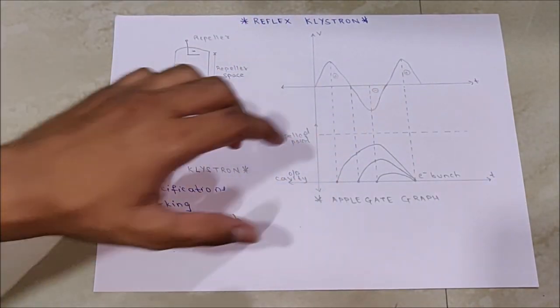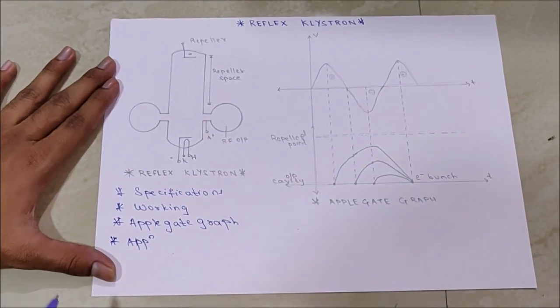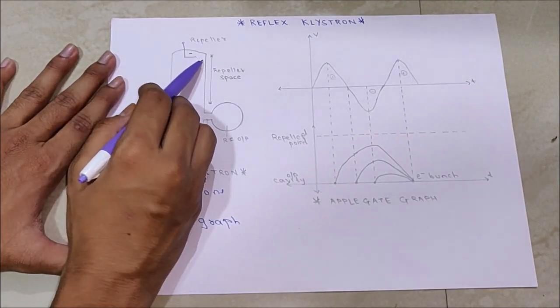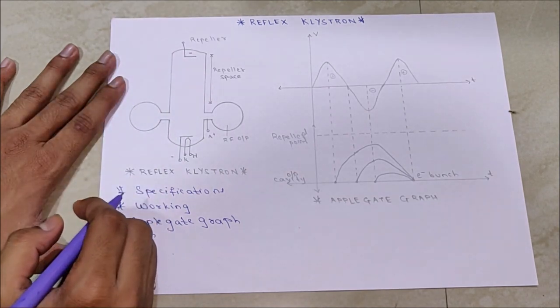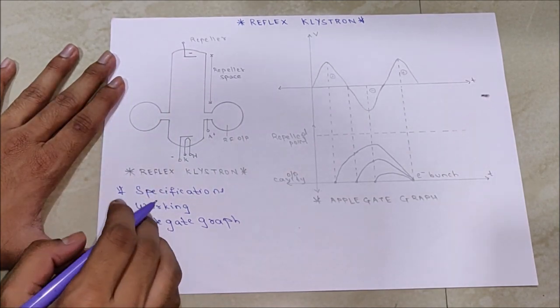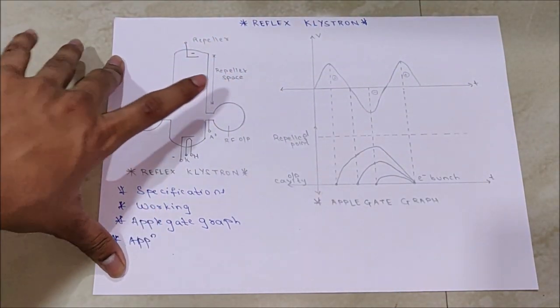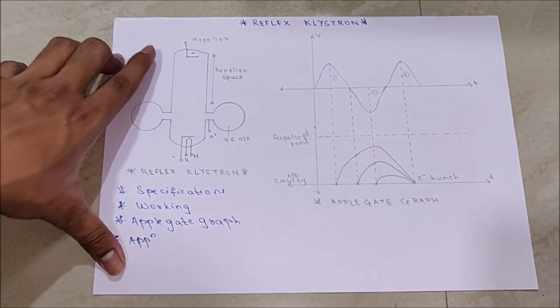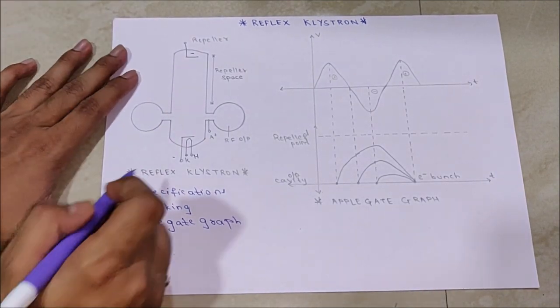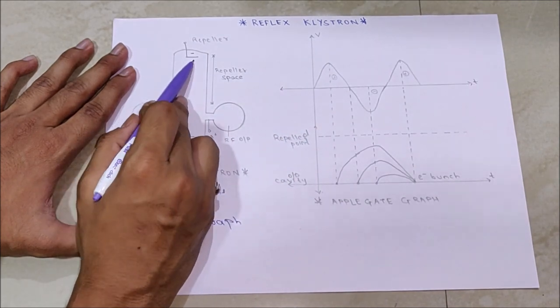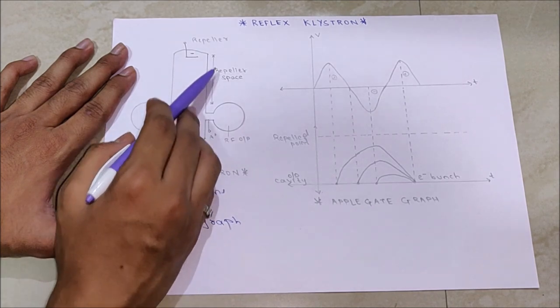For positive cycle, the electron beam is accelerated. It will travel higher distance or more distance because it is positively charged and the repeller is negatively charged, so it will attract and travel more distance in the repeller space.